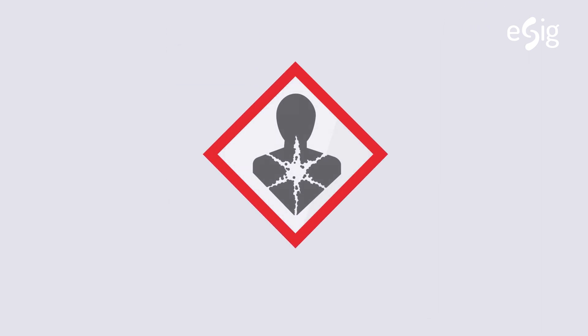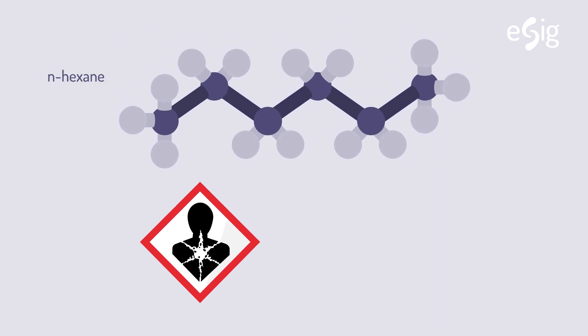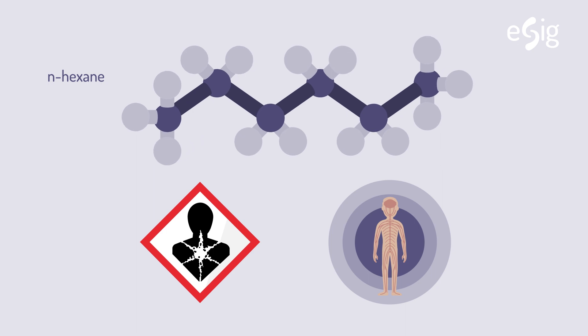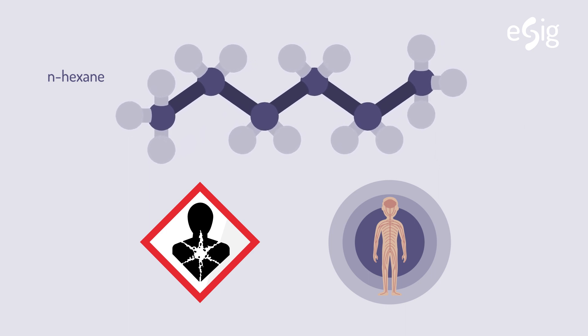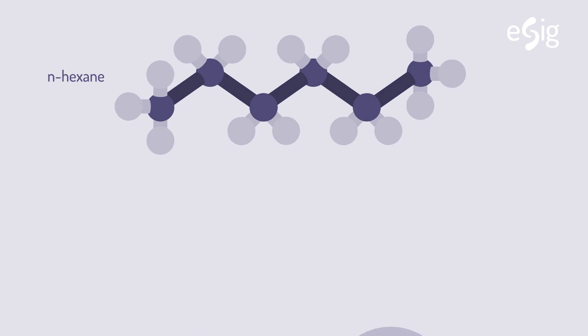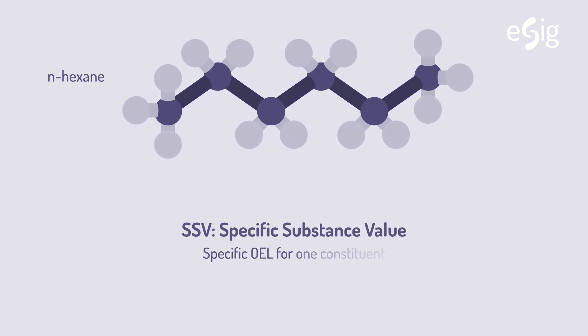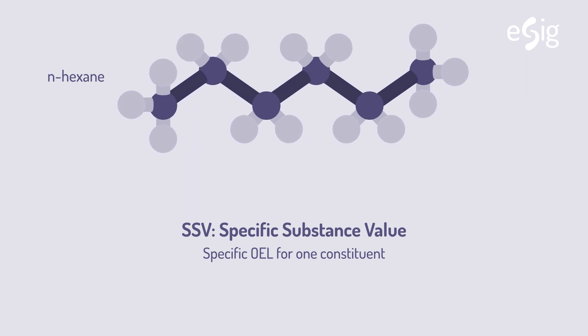However, there are hydrocarbon solvent constituents that have a unique toxicity such as n-hexane that produces effects on the peripheral nervous system and can't be included in the C5 to C8 GGV and must therefore be dealt with separately through a so-called specific substance value or SSV, which is an established OEL for the substance in question.